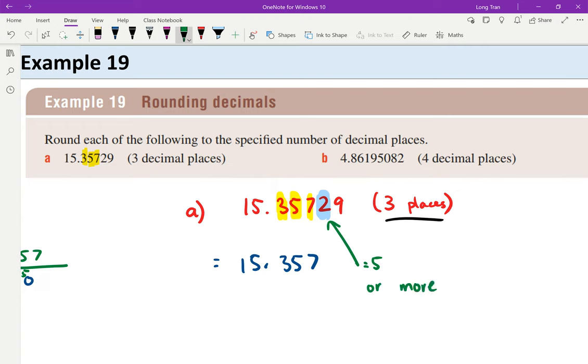So if the next digit is five or more, you round the seven up to eight. But in this case, two is not five or more, so we keep it as 15.357. That's three decimal places. Before you finish your answer, always check the next decimal place.